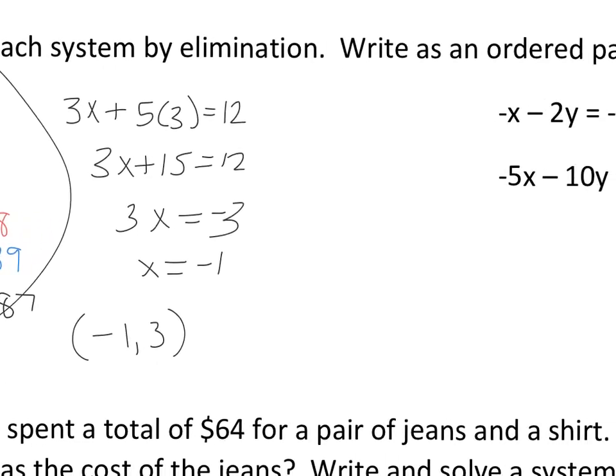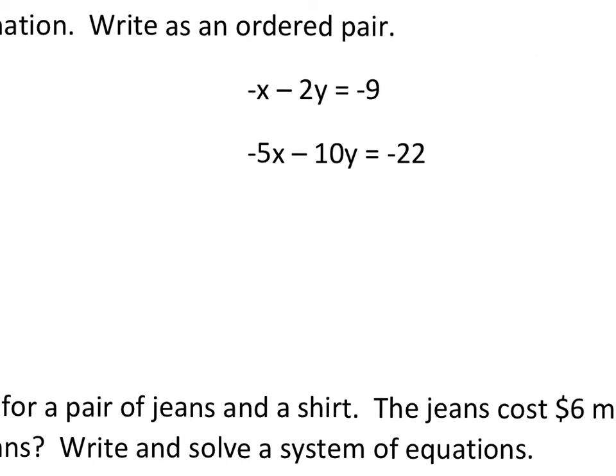And then over here, solve by elimination. I'm going to multiply the top by a positive 5 or a negative 5 because that's going to make the whole thing right here positive 5x, which will eliminate the axis. So I'm going to have a positive 5x plus 10y equals 45. And I can add these together. Cross, cross. That's 0. And this is going to be negative 20 or positive 23.